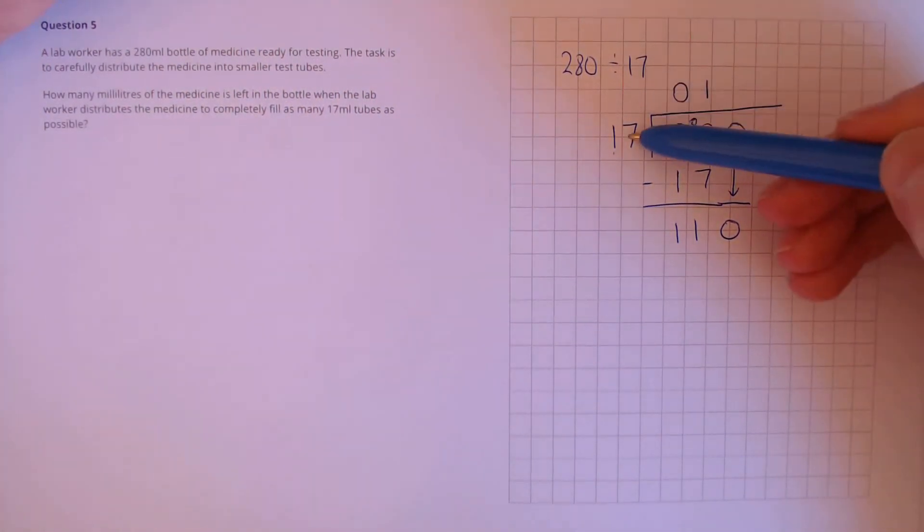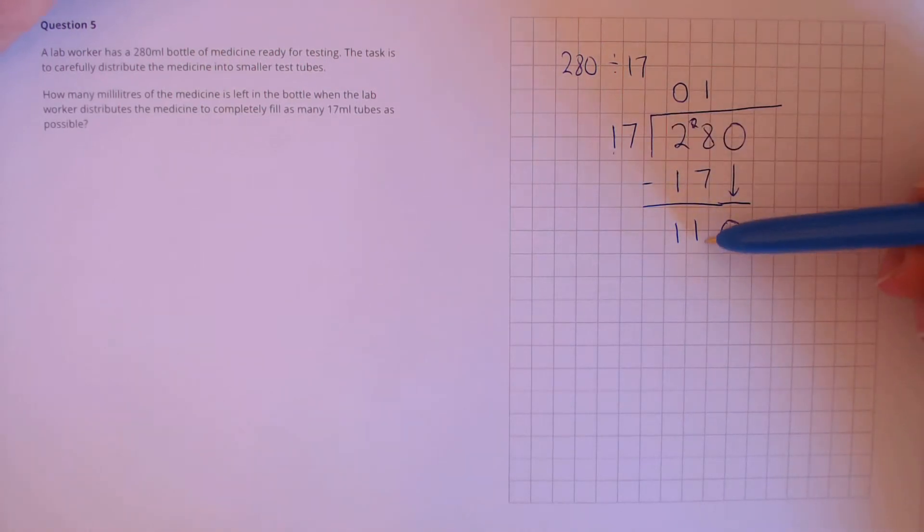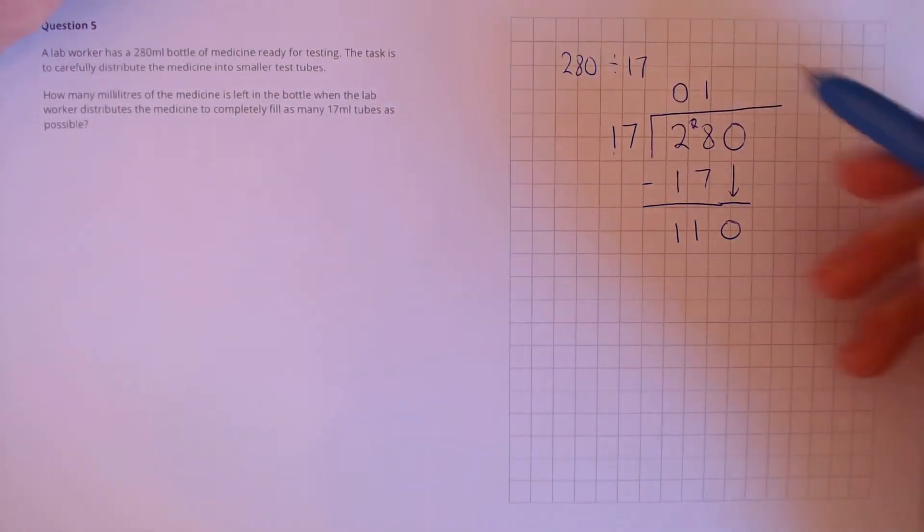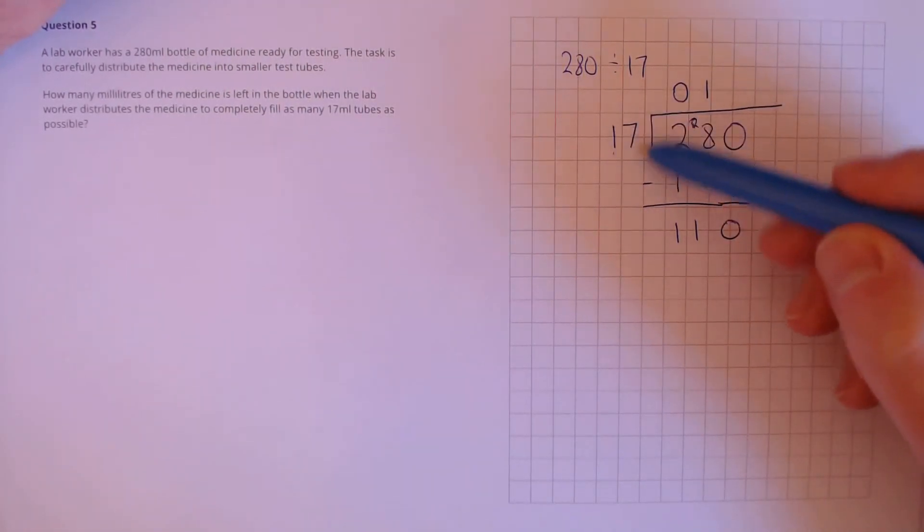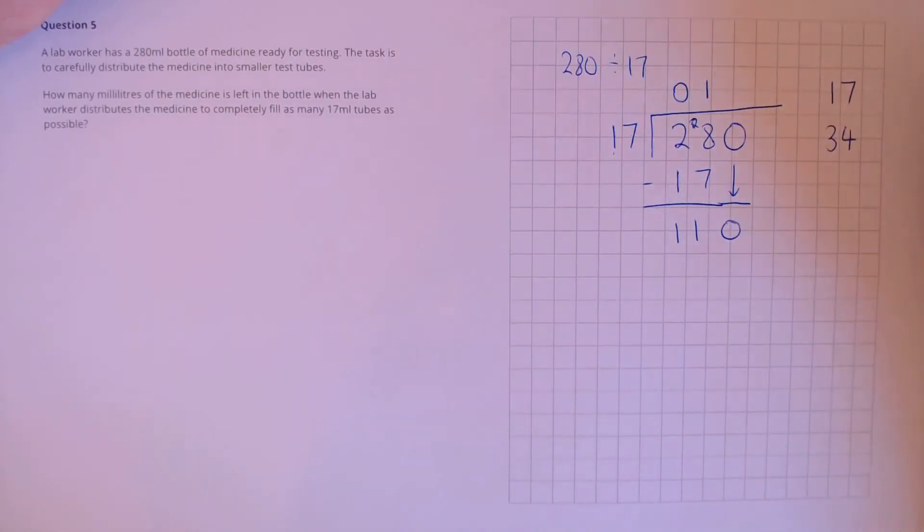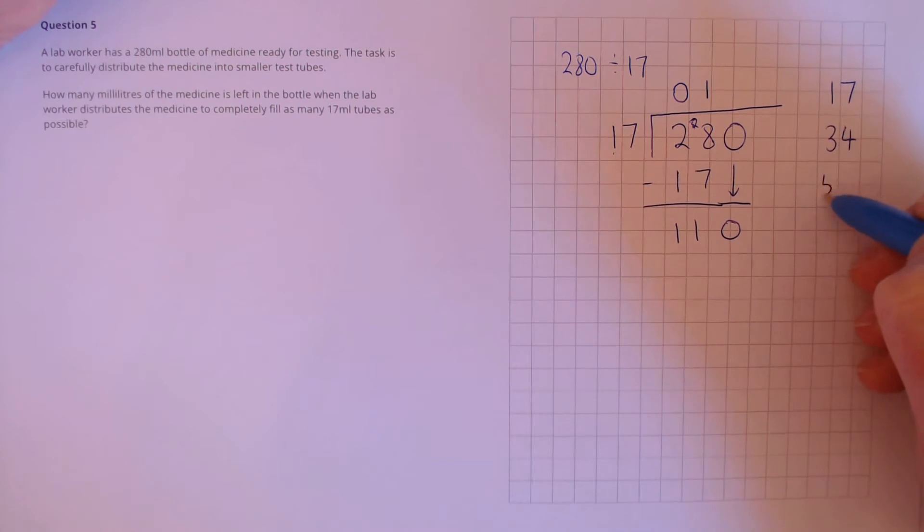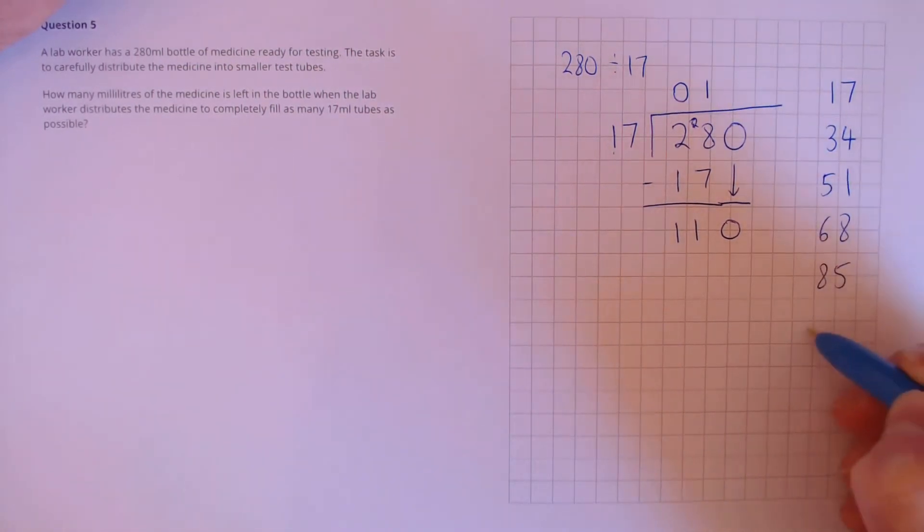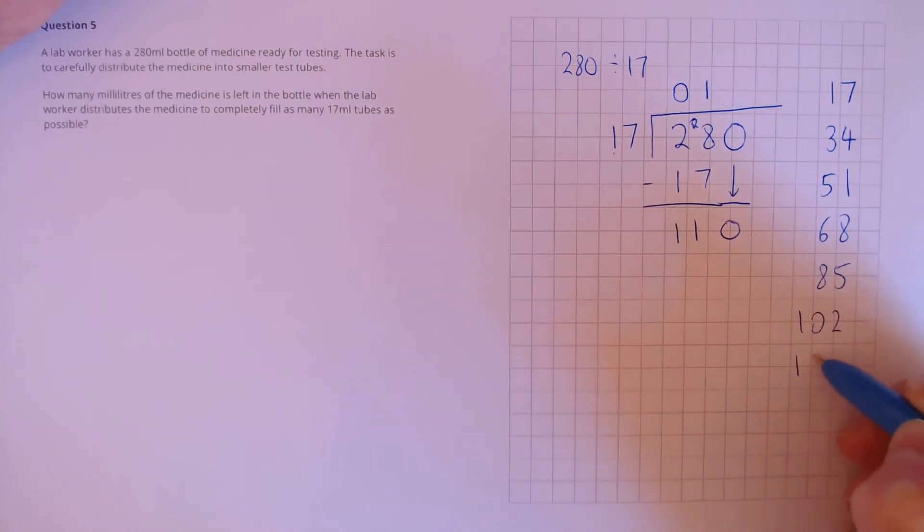Next, we need to see, does 17 go into 110? It does, but we don't know the multiple. In these cases, where we've got a number where we don't know the times table easily, it's useful to write out the first few of the times table simply by doing addition. This is 17 times 1, 17 times 2, times 3, times 4, times 5, 6 and 7.